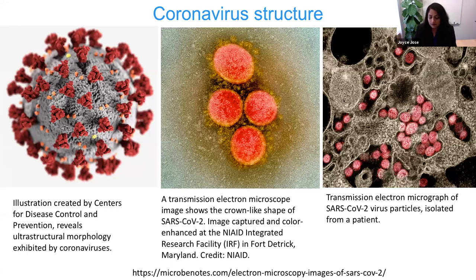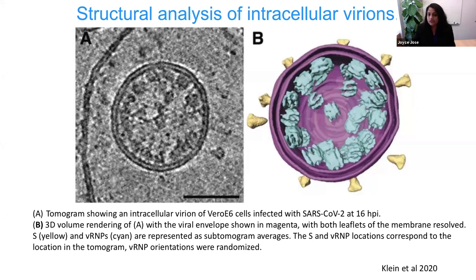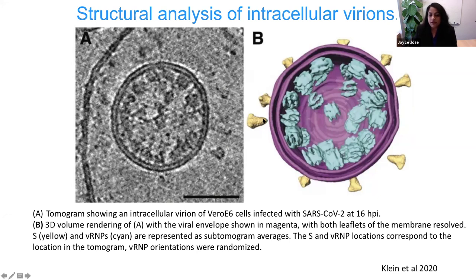These are not icosahedrally arranged particles, so there is no real cryo-EM structure of the entire particle like you have seen for other viruses like Zika. The structure of the virus is shown from inside an infected cell using cryo-electron tomography. The lipid bilayer originates from the host. The spikes are present on the outside in yellow, and you can see the nucleocapsid — the nuclear protein with RNA — inside the virus structure. Altogether it's 100 nanometers in diameter and not icosahedrally arranged.